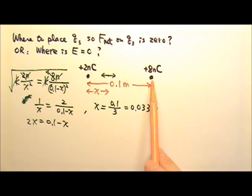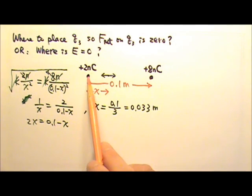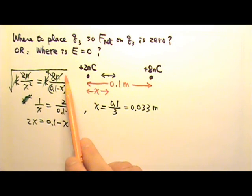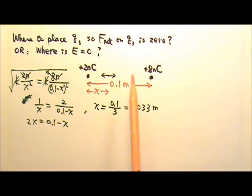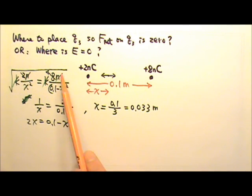If the two charges carry opposite signs, the location would be outside the two charges, closer to the weaker charge — so it would be on the outer side of the weaker charge.